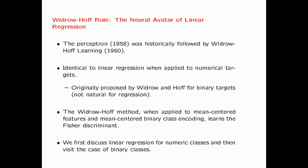The Widrow-Hoff learning rule was the second neural network method that followed the perceptron. The Widrow-Hoff rule is identical to linear regression when applied to numerical targets. However, originally the Widrow-Hoff rule was designed for binary targets.